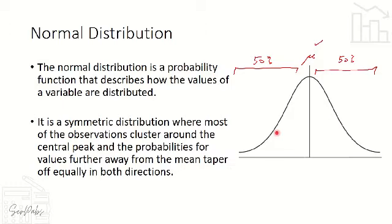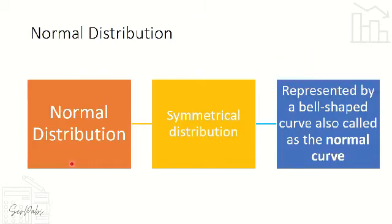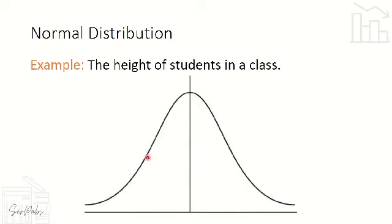Normal distribution is a symmetrical distribution — equal yung distribution natin — and that is represented by a bell-shaped curve, which is also known as the normal curve.